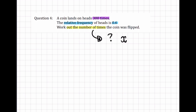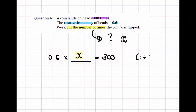We know the relative frequency is 0.6 of it landing on heads, and that would be multiplied by the total number of times the coin was flipped to give us 300 — the number of times it landed on heads. So: 0.6 × X = 300. To isolate X, I divide both sides by 0.6, giving X = 500. Therefore, the coin was tossed 500 times.